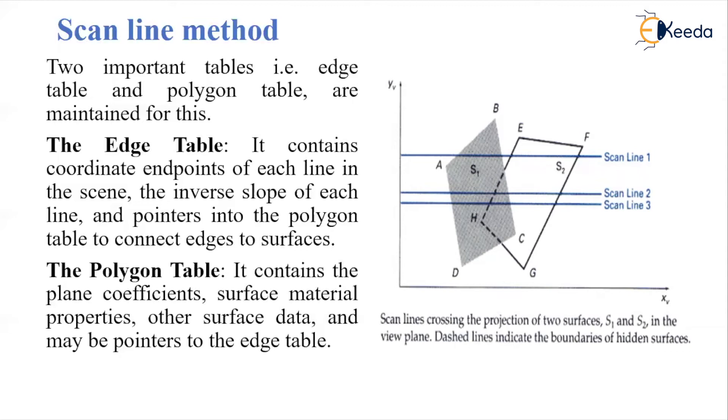In this figure, there are two surfaces S1 and S2, and three scanlines 1, 2, and 3. These are the vertices of the two different surfaces. The dotted line shows the boundary of the hidden surface.